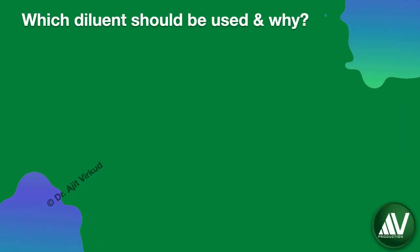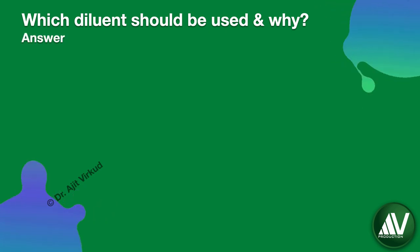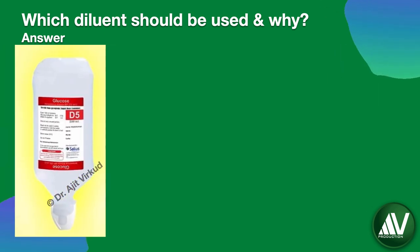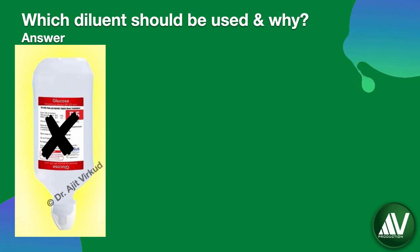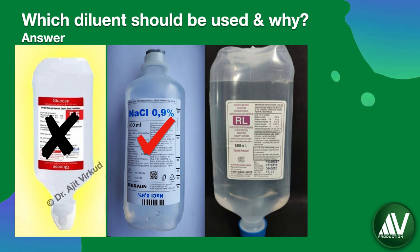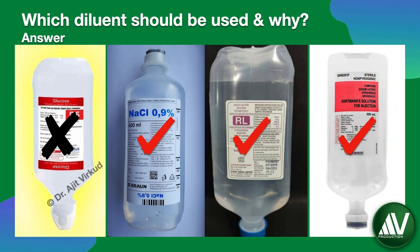Q: When oxytocin is given intravenously, which diluent should be used and why? Answer: Administration of oxytocin in non-electrolyte solutions like dextrose water should be avoided because they are more likely to be associated with water intoxication and hyponatremia, especially when given in large doses. To prevent this, most labor ward protocols use electrolyte infusions like normal saline, Ringer's lactate, or Hartmann's solution for oxytocin administration.